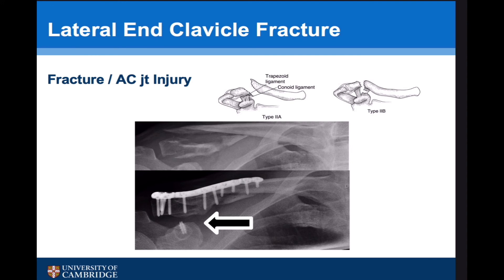The management of lateral fifth clavicle fractures is slightly different. The vast majority of fractures within or lateral to the coracoclavicular ligament are minimally displaced and can generally be treated non-operatively. However, type 2 and type 5 fractures, where the fracture site is just medial to the coracoclavicular ligaments or through the conoid ligament, mean the medial part of the clavicle is likely to be significantly displaced by trapezius. In these cases, we consider fixation using a special plate that is widened at the lateral end to accommodate smaller screws, and as shown by the arrow, a small anchor placed into the coracoid helps reconstruct the forces of the coracoclavicular ligaments.